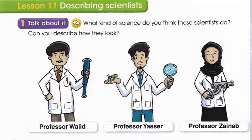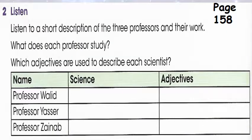What kind of science do you think these scientists do? Can you describe how they look? I am Professor Waleed. I study space. I am very clever and I have discovered three new stars. My students are sometimes lazy, so I shout at them. They think I am rude and moody because I don't speak politely, but they just don't work enough.